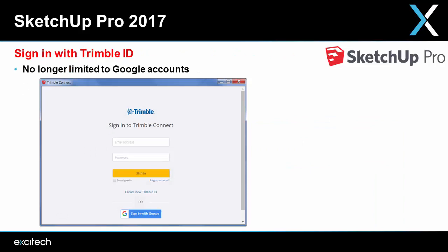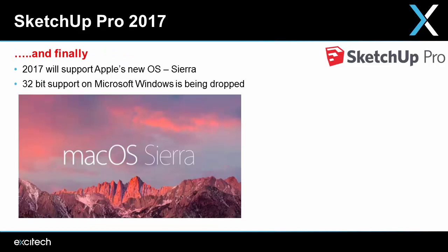You can now create a Trimble account with any email address, not just Google accounts. Finally, from a SketchUp side of things, 2017 will support Apple's Sierra operating system, and 32-bit support will be dropped.